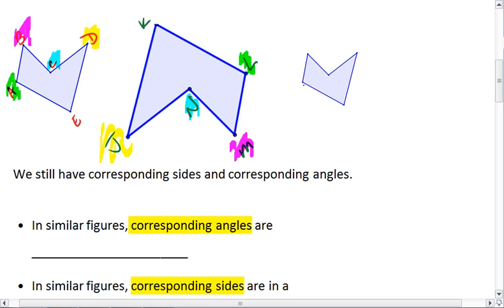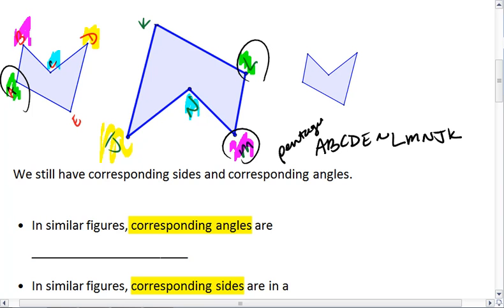Meaning that our figure ABCDE is similar. You see A matches with L, and then we go to M and continue around, LMNJK. These are both pentagons, so pentagon ABCDE is similar to pentagon LMNJK.